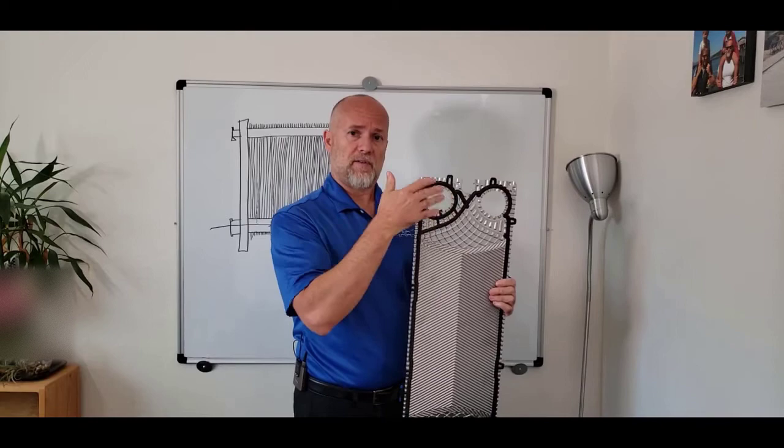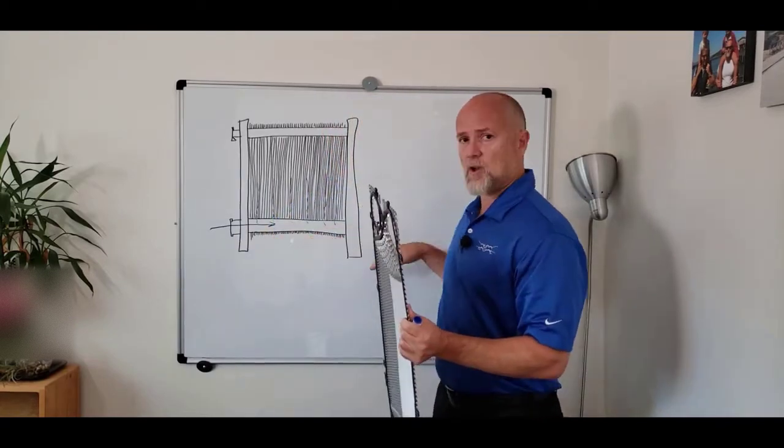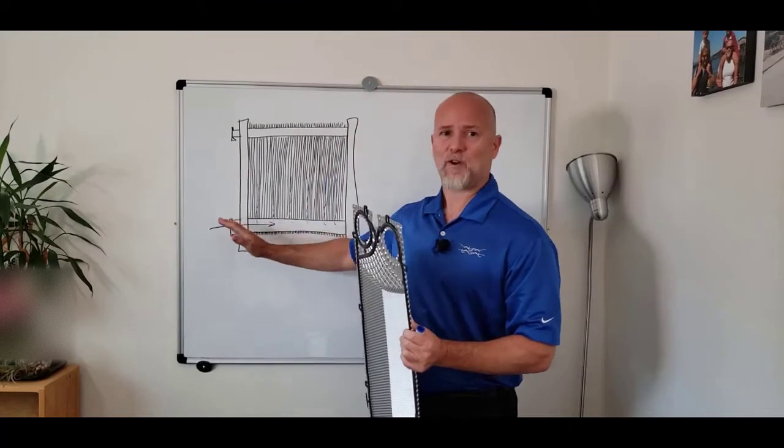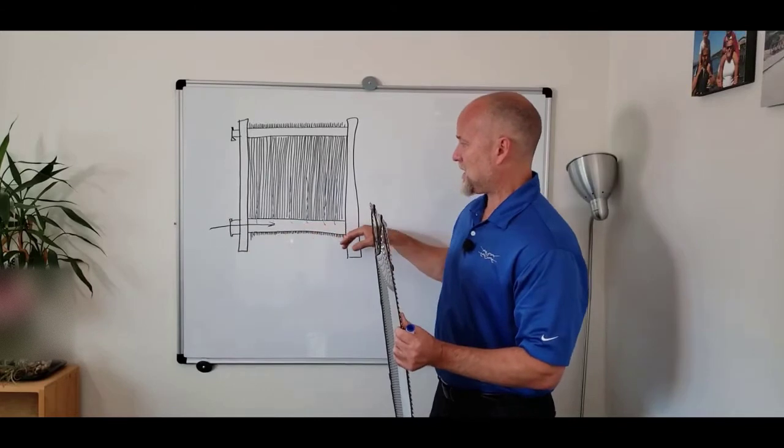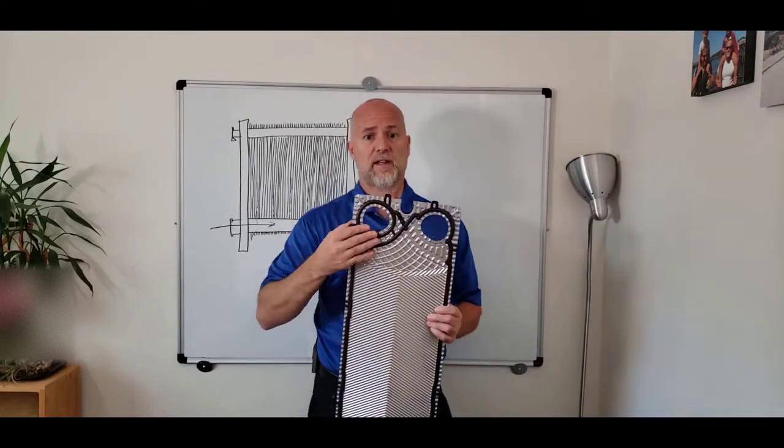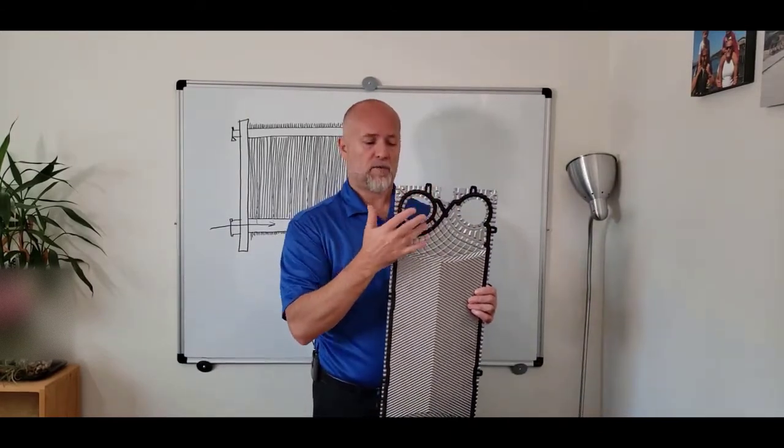This is to facilitate even distribution through the plate pack. Of course, the ports at the frame are round so they can connect with the piping. But inside the heat exchanger, the distribution is facilitated by the shape of this port.